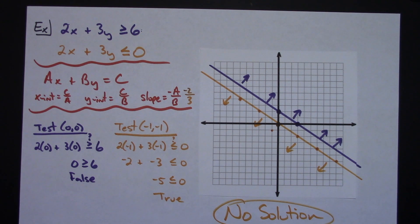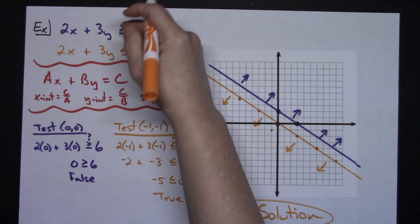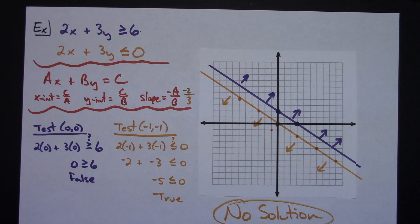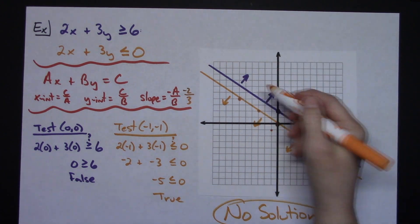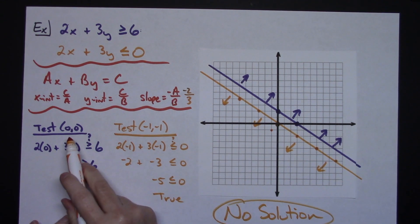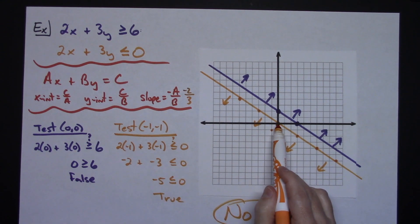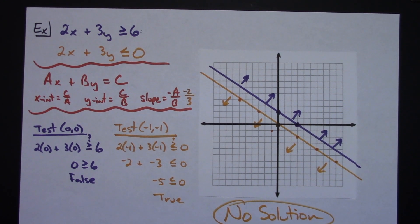Just two quick examples of graphing a system of linear inequalities. The inequalities can come in just about any form, and how you choose to shade — whether you fill the whole region or just use arrows — is your choice. The recommendation is always to test (0, 0) unless the line runs through that point, in which case pick a different point. Thanks for watching — if the videos are helping, share with your friends and subscribe to the channel.